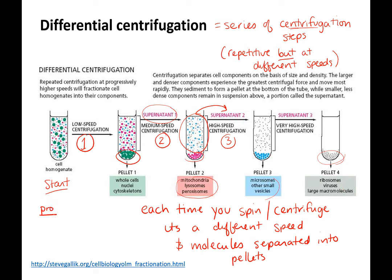The advantage of differential centrifugation is it's a pretty simple setup. All you need is a solution, a bunch of centrifuge tubes, and a centrifuge — you do a spin, move the liquid, do a spin, move the liquid. The con is it involves many multiple steps and we have to wait each time to centrifuge. It's also what we call a crude separation — not super accurate. You can get mitochondria, lysosomes, and peroxisomes all in the same pellet, so you're not separating things in fine detail.